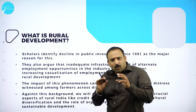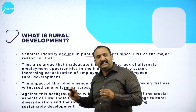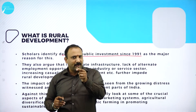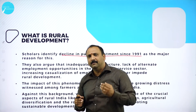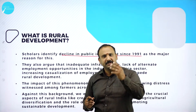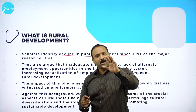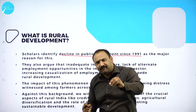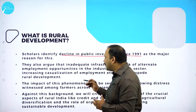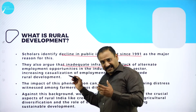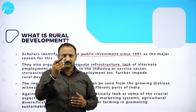Scholars and experts identify a decline in public investment since 1991 as probably one of the reasons behind underdevelopment. In 1991, when India opened its doors trying to become a competitive nation — embracing liberalization, privatization and globalization — we somewhere forgot that we have to invest and pay attention to rural India. Experts also argue that inadequate infrastructure, lack of employment, and lack of resources have been reasons for the decline in rural development, which is quite true.